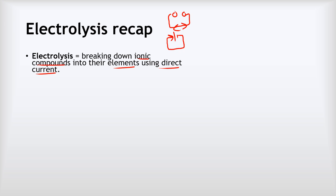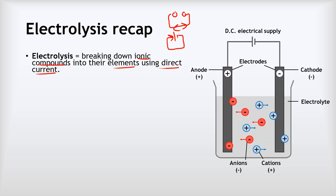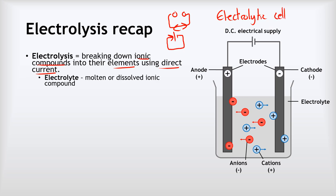In order for electrolysis to happen we need an electrolytic cell which looks like this. There are a few different components in our electrolytic cell. The first thing is we have an electrolyte — that is our molten or dissolved ionic compound — and it needs to be molten or dissolved so that the ions are free to move and conduct electricity.